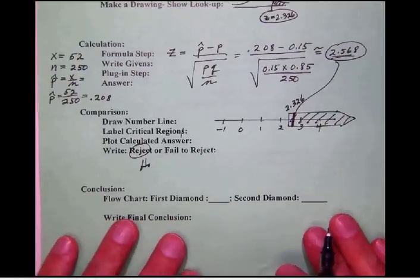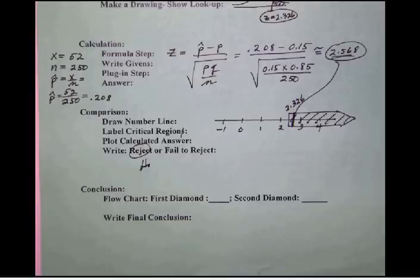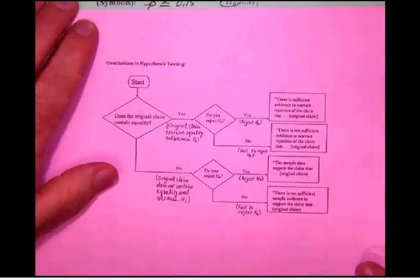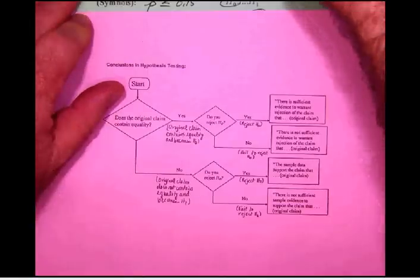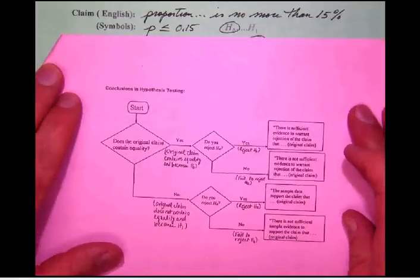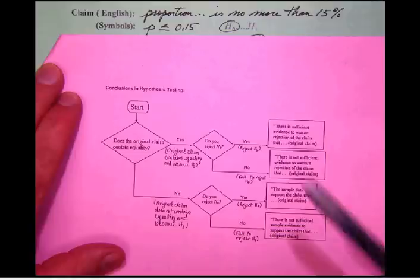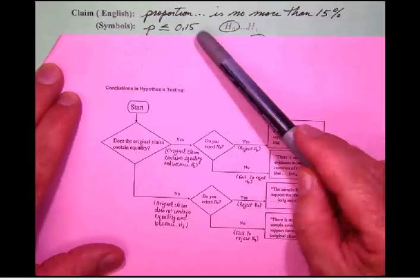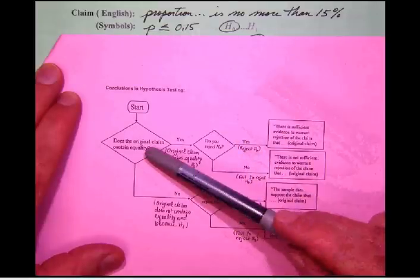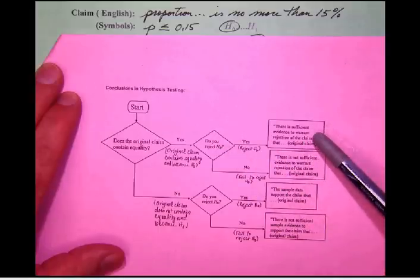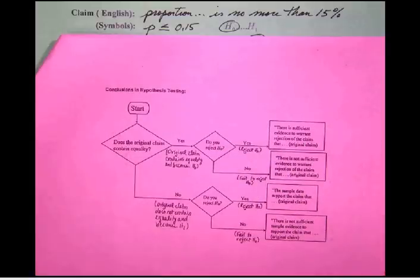As always, to conclude the test, we need to go back here and take a look at our diamond chart. Simply go in here and begin answering the questions. Does the original claim contain the condition of equality? This time we see that it does because the original claim is no more than 15%, which means less than or equal to 15%, which does in fact contain the equality. So yes. Did we reject? Yes we did. So there is sufficient evidence to warrant rejection of the claim.